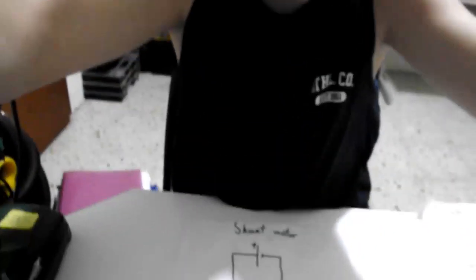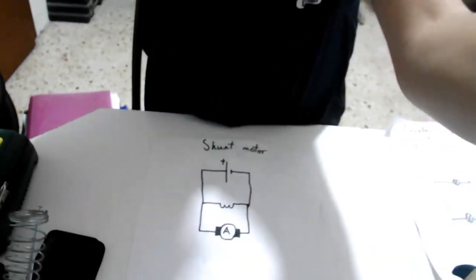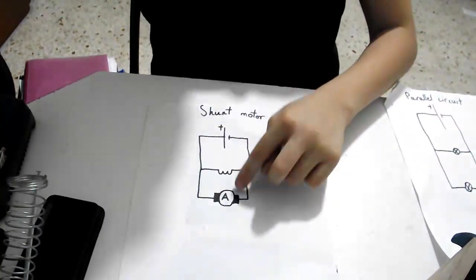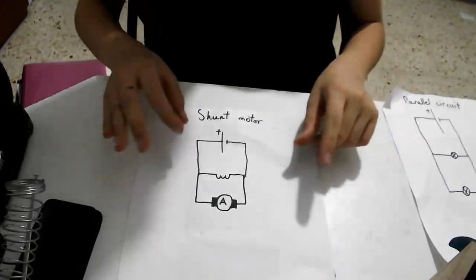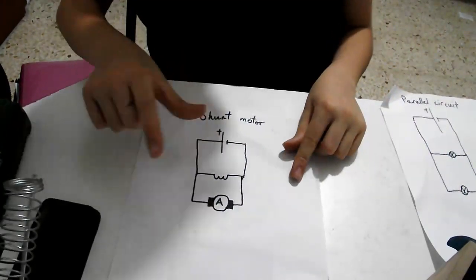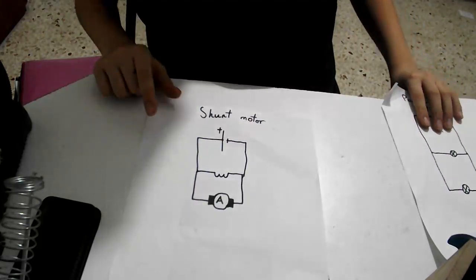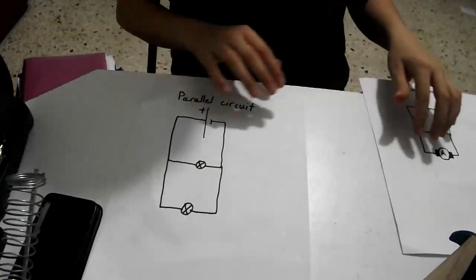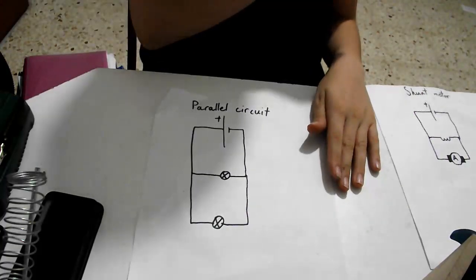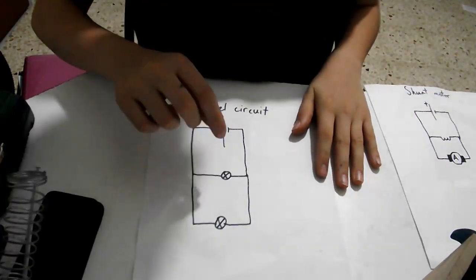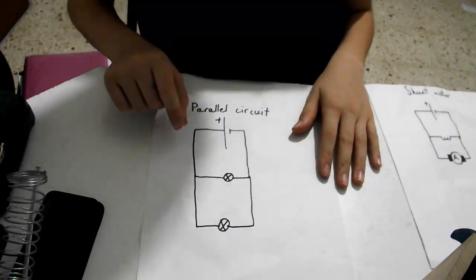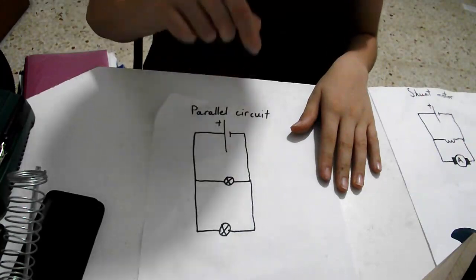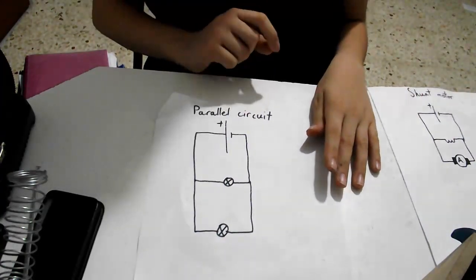Here is a theoretical example of a shunt motor. As you can see, the two windings — field and armature — are connected in parallel, in different loops of the circuit. I recall mentioning parallel circuits in the previous video. In a parallel circuit, the two bulbs are connected on different loops of the circuit, which is known as the parallel circuit.